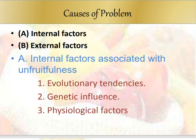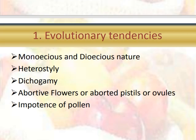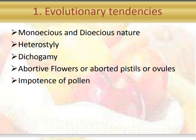The internal factors associated with unfruitfulness include evolutionary tendencies, genetic influences, and physiological factors. Evolutionary tendencies include the monoecious and dioecious nature of plants, heterostyly, dichogamy, abortive flowers or aborted pistils or ovules, and impotence of the pollen.